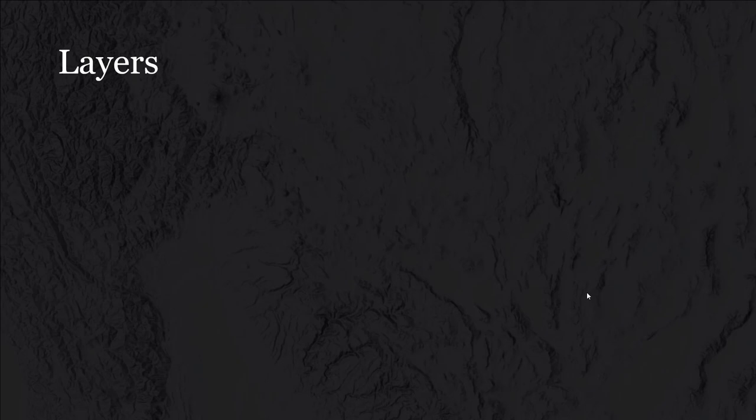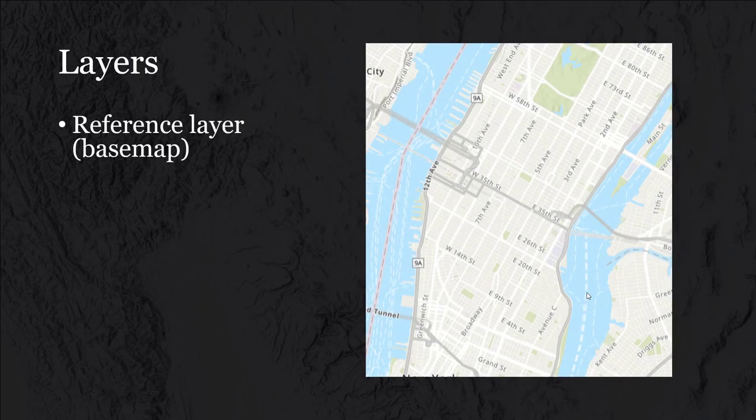So we just talked about the components of a GIS. Now let's step back to some of the most critical aspects of what a GIS can do. At its heart, a GIS is about layers — taking different pieces of information and putting them on top of each other to get a better understanding, either visually or analytically, of what is taking place and what the relationship between that data is.